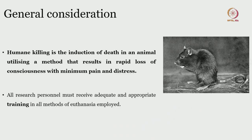It is also important to know the techniques of harvesting different organs. We will first cover the euthanasia aspect, then look at organ harvesting. You need to understand why this is such a big deal and why we have an entire session dedicated to euthanasia. The simple definition of humane killing is the induction of death in an animal utilizing a method that results in rapid loss of consciousness with minimum pain and distress — those are the key words.